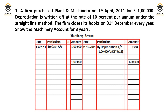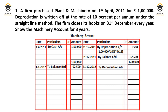We close the account — both sides balance at Rs. 1 lakh, and the balancing figure is Rs. 92,500, written as 'By Balance c/d' on 31st December 2011. This balance is brought down as Rs. 92,500 on 1st January 2012. At the end of 31st December 2012, we charge depreciation again. This time the asset is used for a full year, so depreciation = 1,00,000 × 10% = Rs. 10,000.